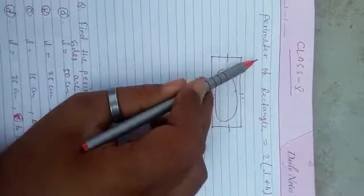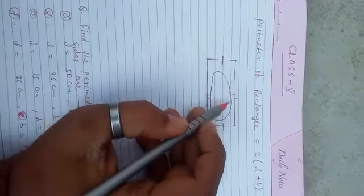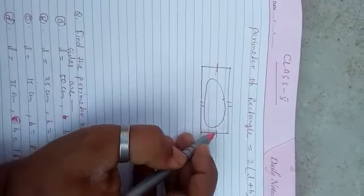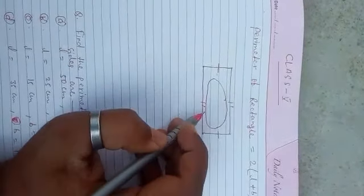Today we are going to prove the formula: perimeter of a rectangle equals 2 multiplied by (l + b). Let us look at a rectangle. It is a shape in which opposite sides are equal.